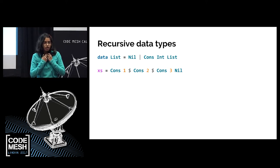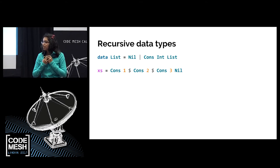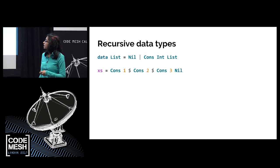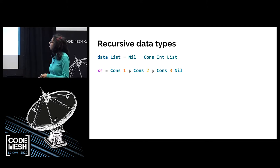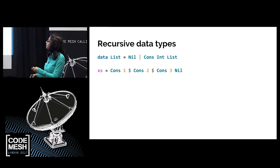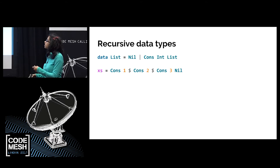Recursive data types. I'm sure you've all probably worked with lists before — this is probably your most basic example. This is Haskell. I figured Haskell would be okay here; I do have a backup presentation in Scala if more preferable. This is a recursive data type in Haskell. I've removed the parameter on lists, so this just represents a list of integers. We know it's recursive because it references itself.